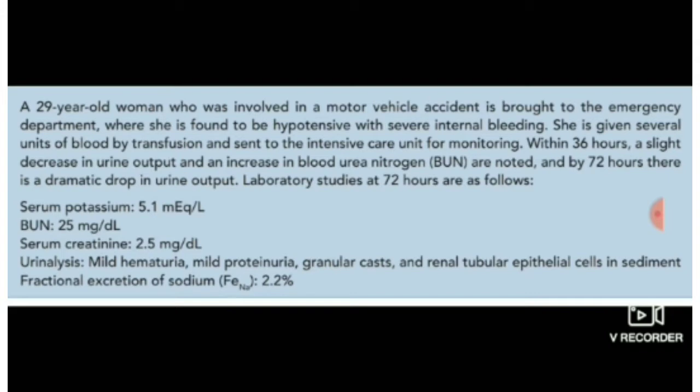Within 36 hours, a slight decrease in urine output and an increase in blood urea nitrogen is noted. By 72 hours there is a dramatic drop in urine output. Laboratory studies at 72 hours show: serum potassium 5.1, blood urea nitrogen 25, serum creatinine 2.5, urinalysis with mild hematuria, mild proteinuria, granular casts, renal tubular epithelial cells in sediment, and fractional excretion of sodium 2.2%.